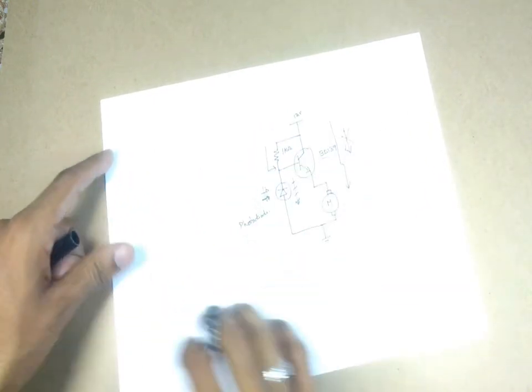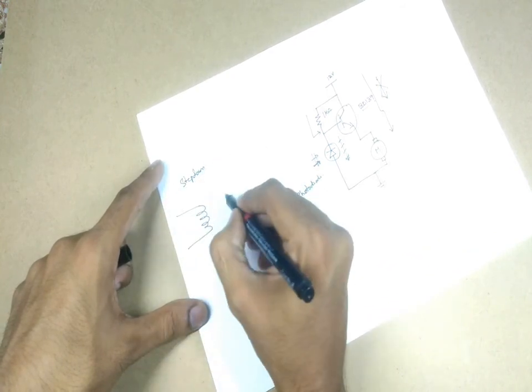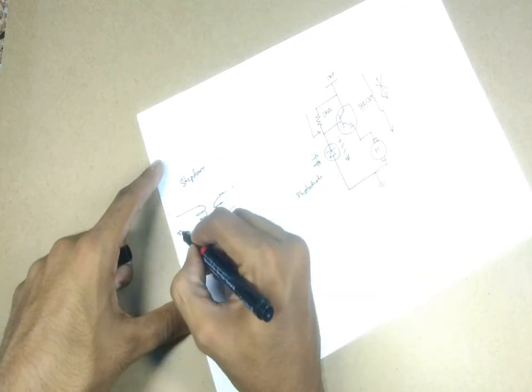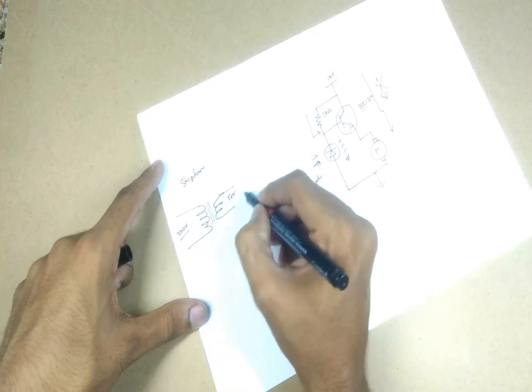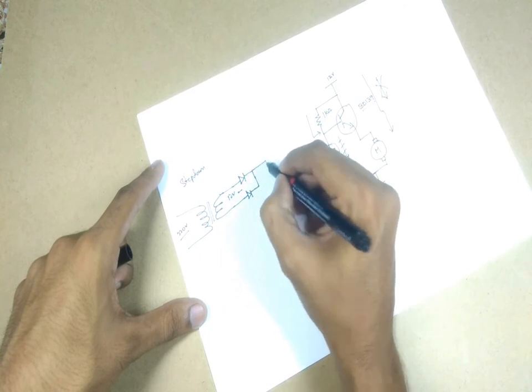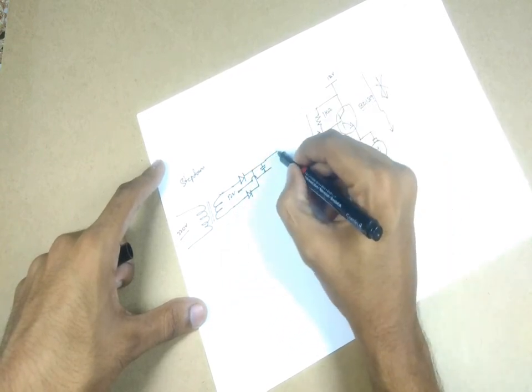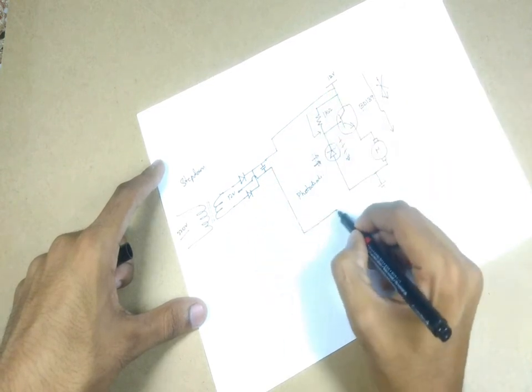For the power supply we are using a simple center tap transformer which is a 12-0-12 transformer. The transformer output is connected to 2 diodes in a full wave rectifier combination to get 12V DC. The output of these diodes is connected to a capacitor and directly to the circuit.